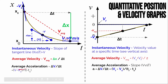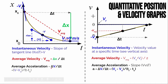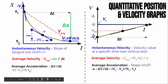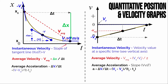We can also use that same equation to calculate average acceleration from a position-time graph. We take the change in velocity divided by the change in time — that's (final velocity − initial velocity) / (final time − initial time). If given only a position-time graph, we first determine the initial and final velocities by finding the slopes of the tangent lines at those moments, then plug them into the acceleration equation.